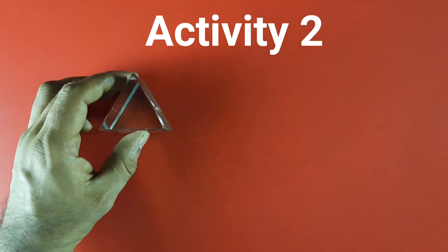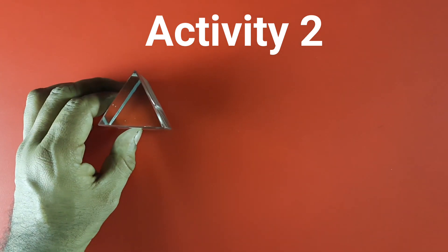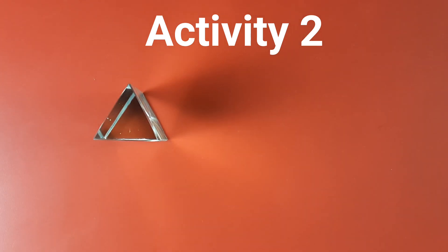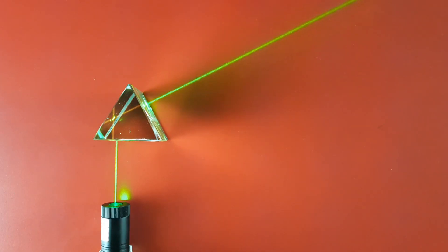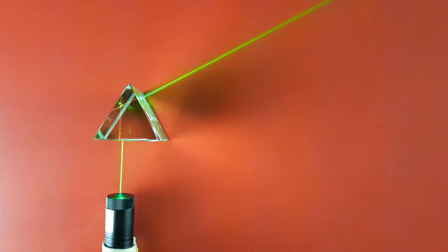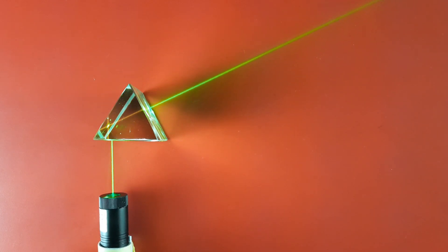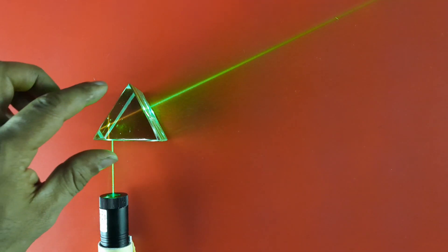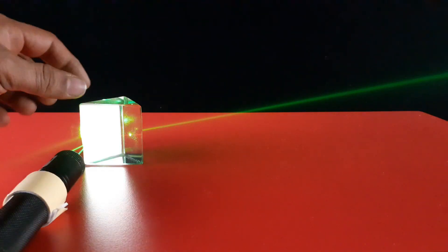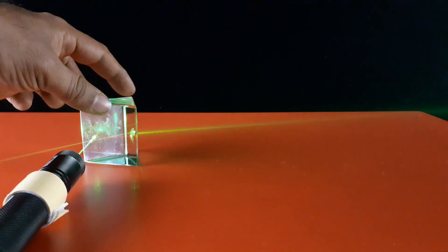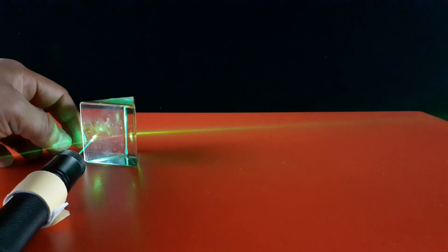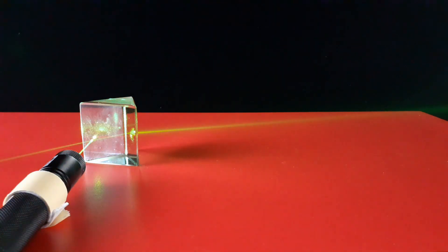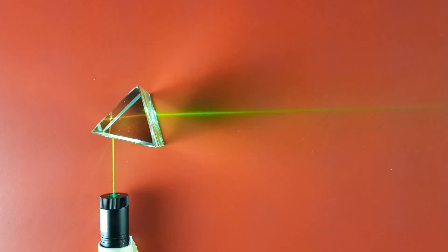In activity two, we will show you total internal reflection in a prism. Pass the laser beam through the prism — we need to pass the laser beam at a particular angle to reflect it internally in the prism. We will talk about this angle at which total internal reflection takes place later in this video.